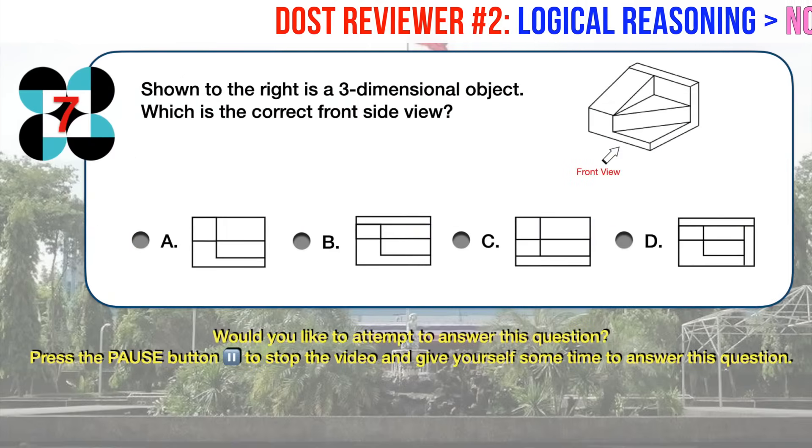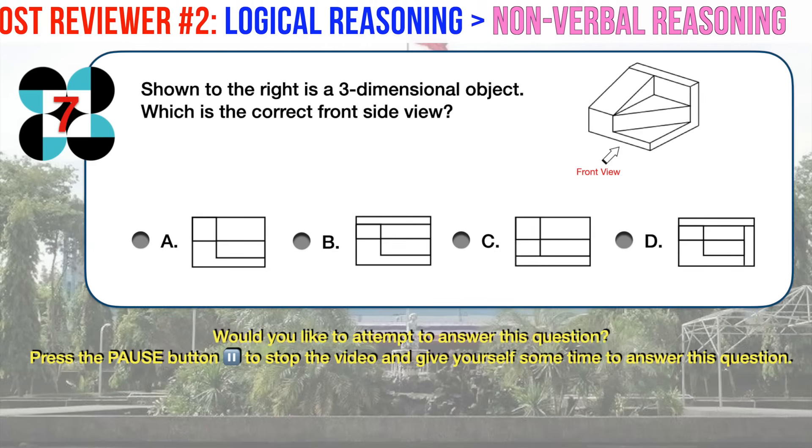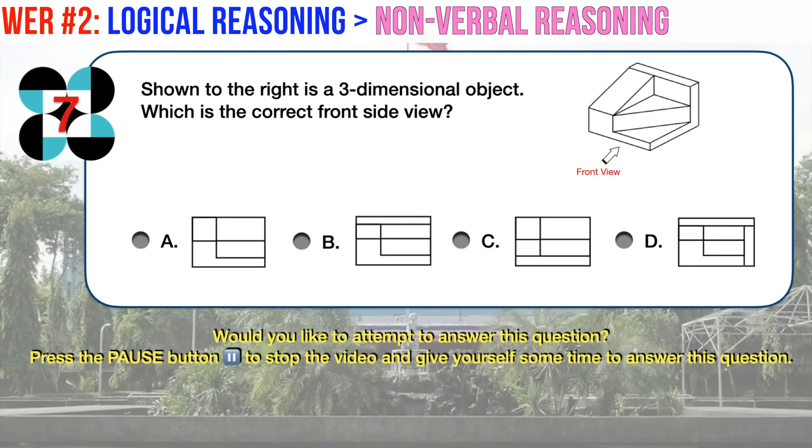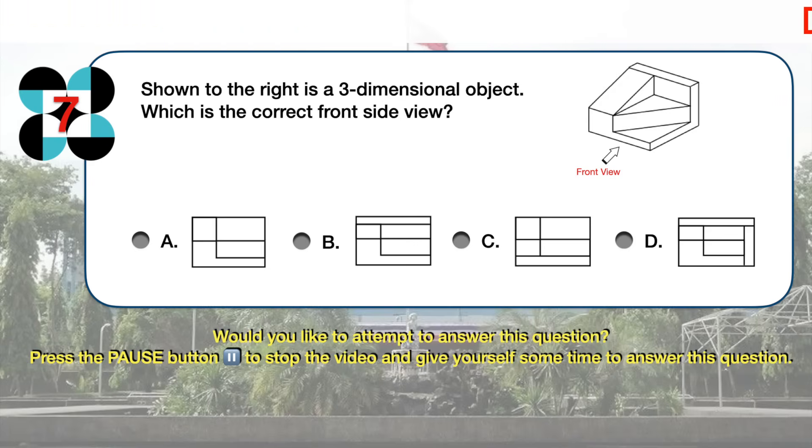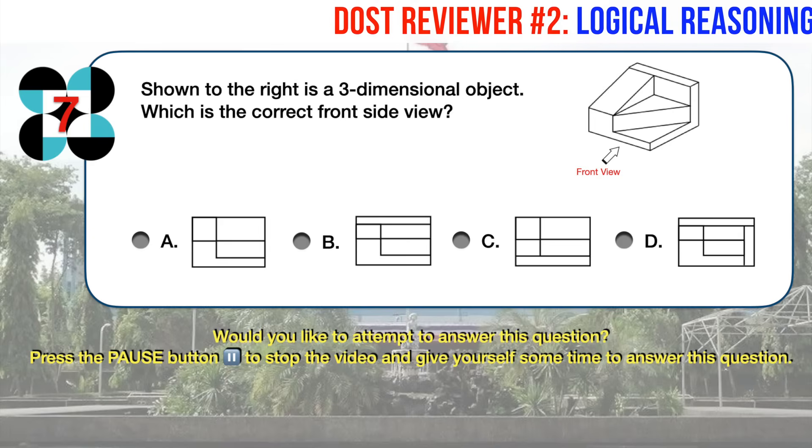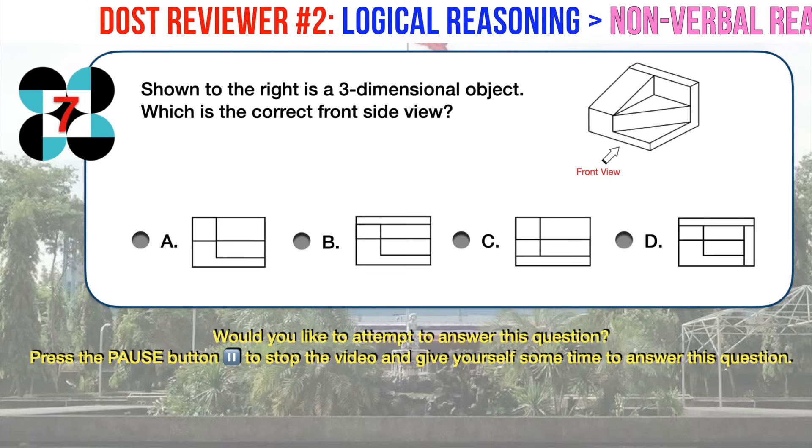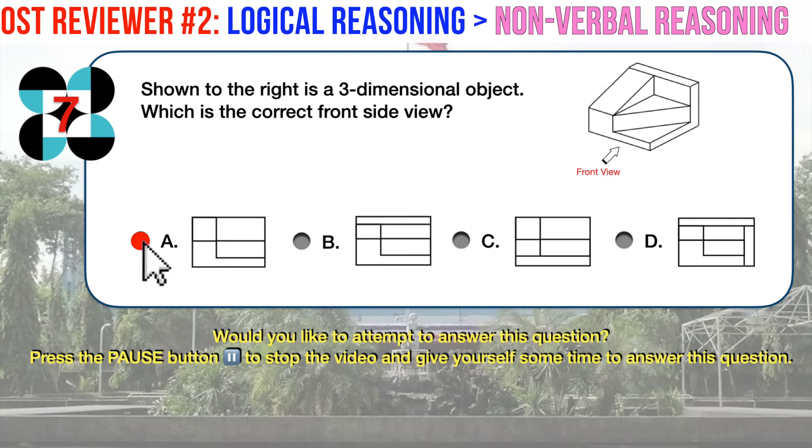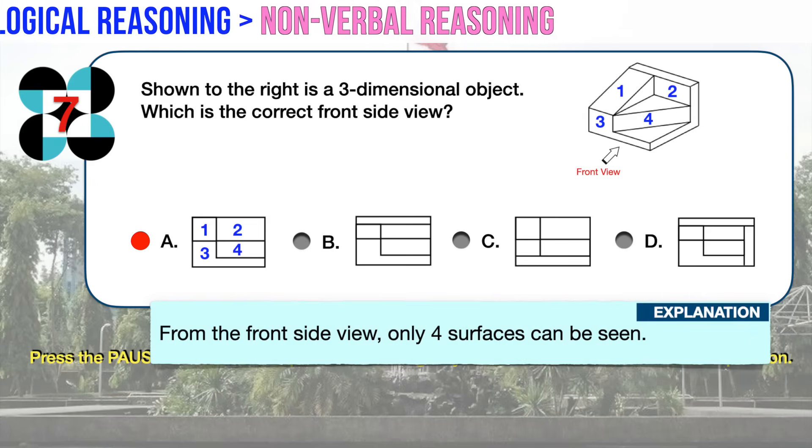Nonverbal reasoning number seven. Shown to the right is a three-dimensional object. Which is the correct front side view? The correct answer is A. From the front side view, only four surfaces can be seen as shown.